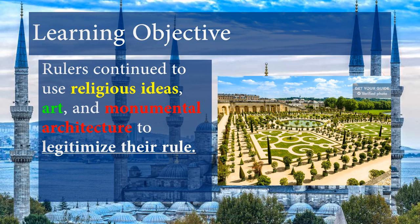The next learning objective: rulers continue to use religious ideas, art, and monumental architecture to legitimize their rule. College Board loves the term 'legitimize their rule' for the AP test. We've talked a lot about using religion to legitimize rule — the divine right of kings, the Chinese mandate of heaven, pharaohs as god-kings, early Roman emperors as demigods. Throughout history, rulers use religion to legitimize their power. But they also use art and monumental architecture.